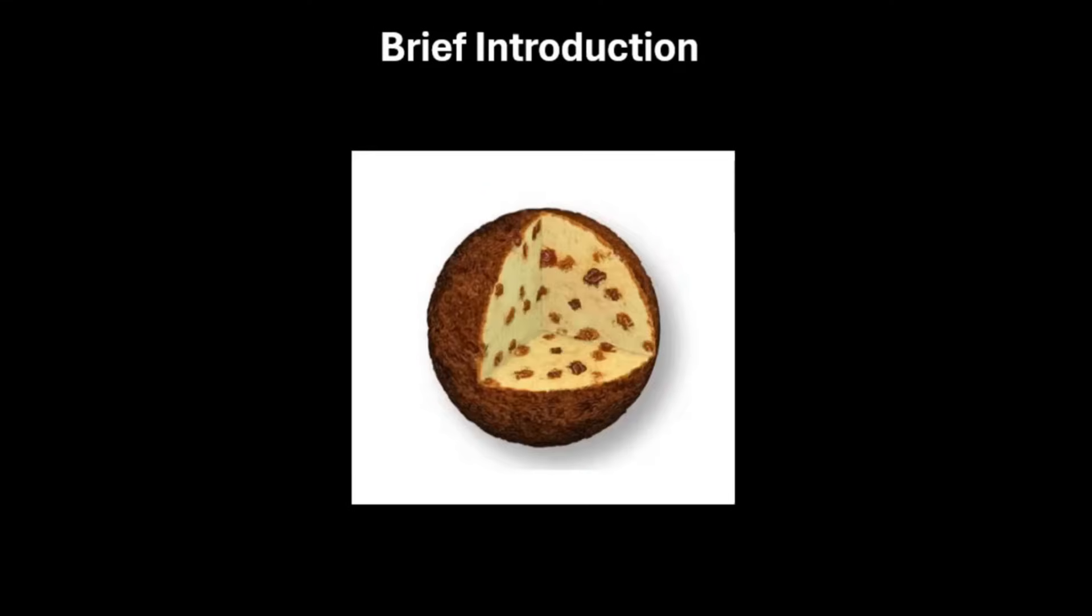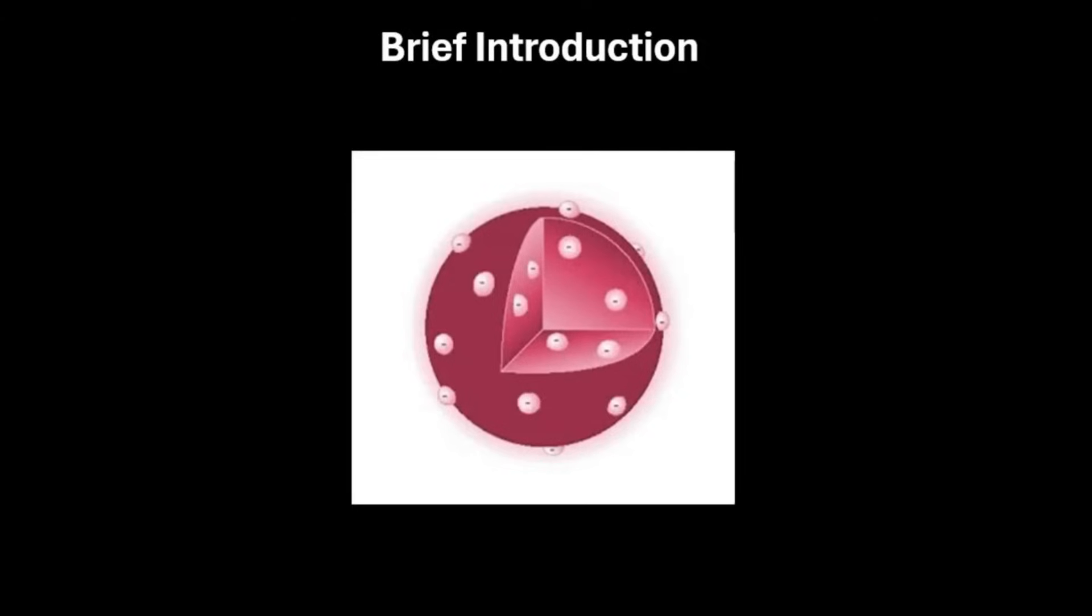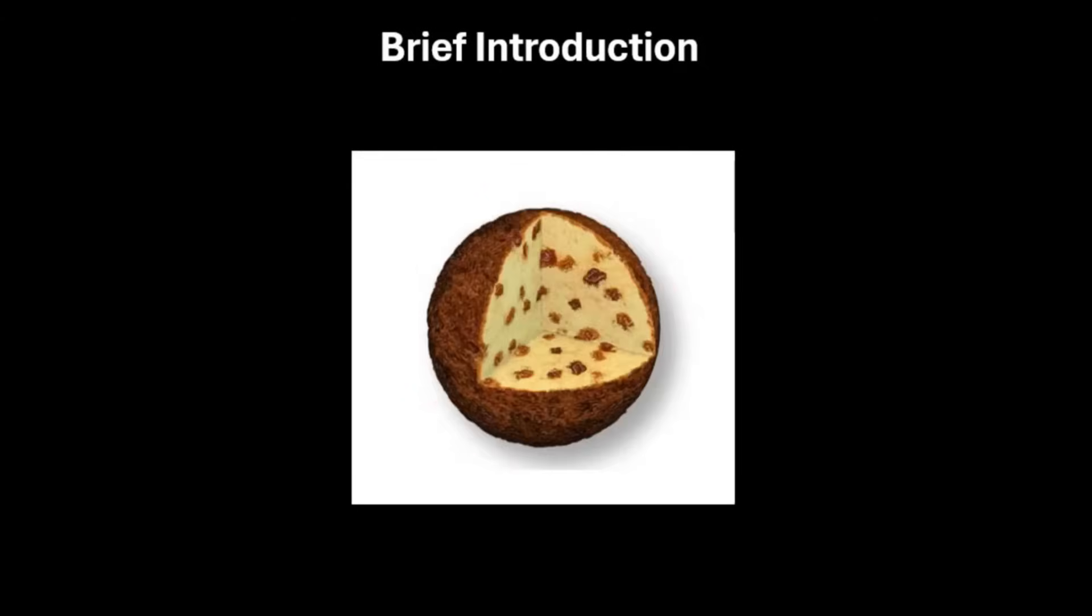In the early 20th century, the prevailing model of the atom was known as the plum-pudding model or Thomson's model.